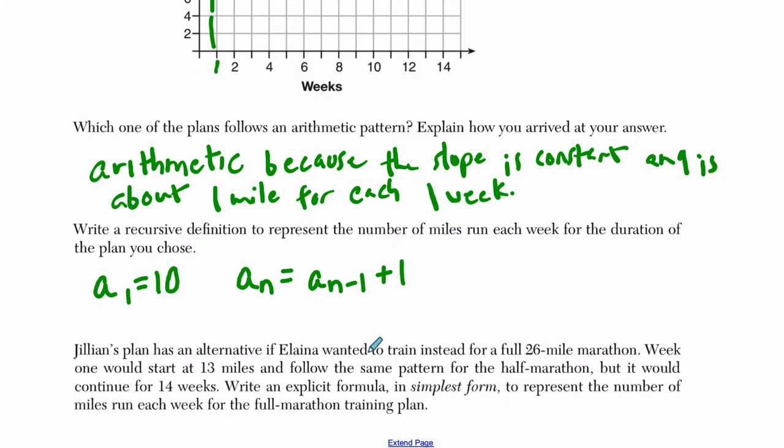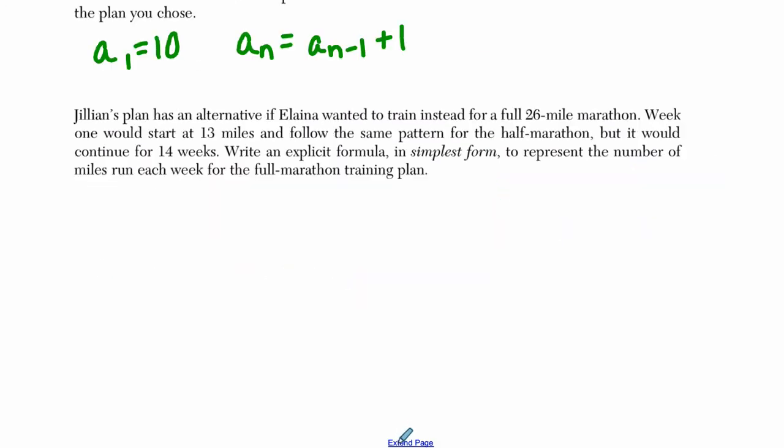Alright. So then finally, we go to Jillian's plan has an alternative. Okay. If Elena wanted to train for a full 26 mile marathon, week one would start at 13 miles and follow the same pattern for the half marathon, but it would continue for 14 weeks. Write an explicit formula.